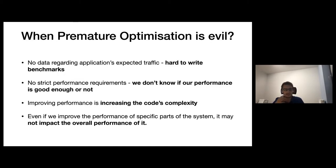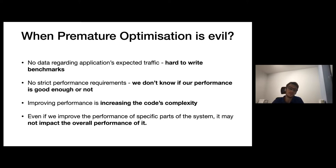There is an old computer science saying that premature optimization is the root of all evil, and it has a solid background because it's accurate for a lot of use cases. Without any input data about expected traffic and SLA, it's hard to reason about your code and its required performance. Optimizing random paths in code in such a situation is like shooting in the dark — you will complicate your code without a sane reason. Often when writing application code, we don't have much input data regarding expected traffic. In an ideal world, you'd always have information about expected throughput and maximum latency requirements. In reality, we often need to follow a more ad hoc approach — starting by writing software that is maintainable and easy to change, without strict performance requirements.